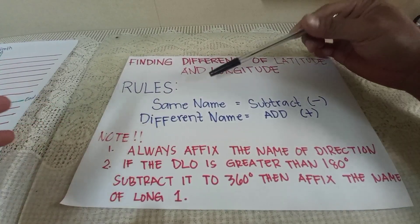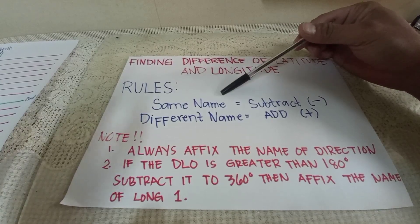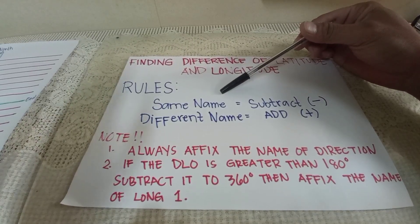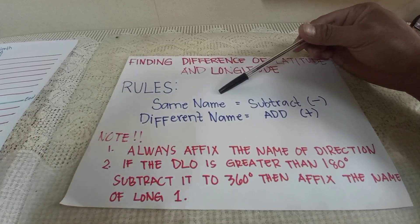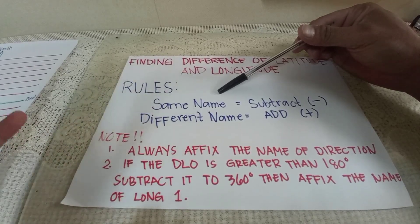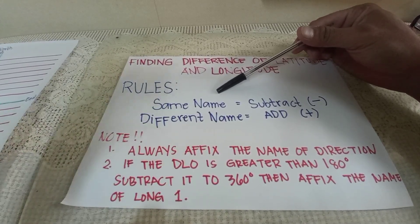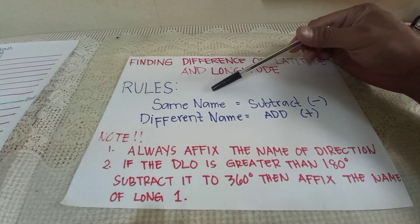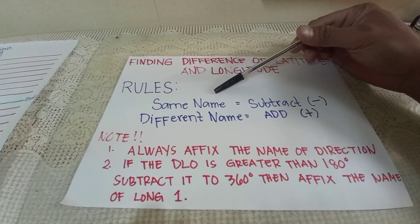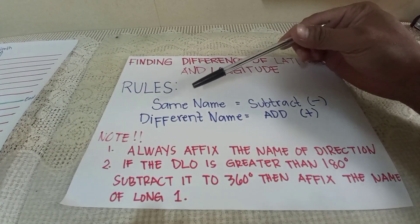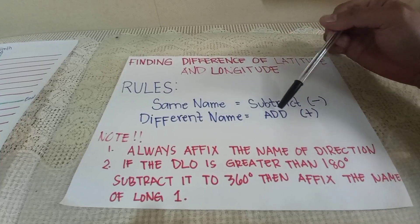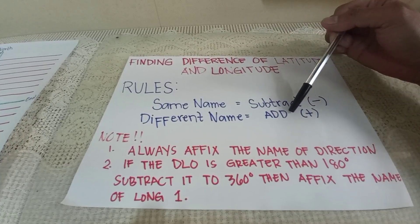Same name means south-south, north-north, east-east, or west-west. That is the name. Same name — subtract. And if you have a different name, you have to add.